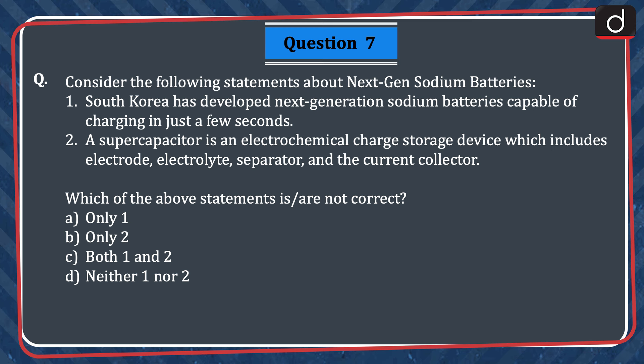Next question: consider the following statements about next-generation sodium batteries. 1. South Korea has developed next-generation sodium batteries capable of charging in just a few seconds. 2. A supercapacitor is an electrochemical charge storage device which includes electrode, electrolyte, separator, and the current collector. Which of the above statements is or are not correct? Only one, only two, both one and two, or neither one nor two? The correct answer is option D, neither one nor two — that is, both statements are correct.